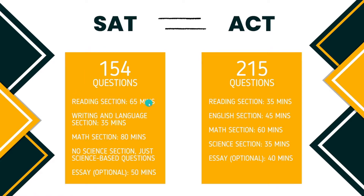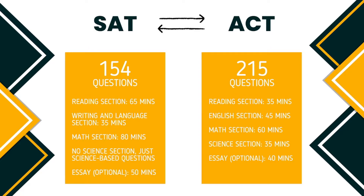In the SAT reading section, you'll be reading five passages taken from literature, history, social studies, and the natural sciences. You will then answer 52 questions, which vary from determining the meaning of words in context, deciding why an author included a certain detail, finding the main idea of a passage, and comparing two passages, among other things.